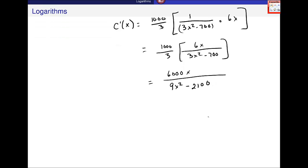And now I want to plug in, I mean now that's my C'(x). That's it. Now I want to go ahead and plug in, we said we were going to plug in 60. So I'm going to do that. C'(60), 6,000 times 60 over 9, 60 squared minus 2100.